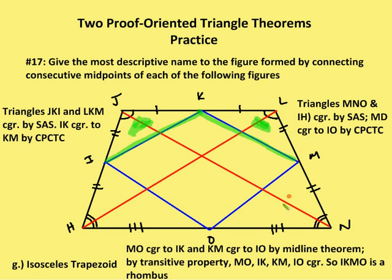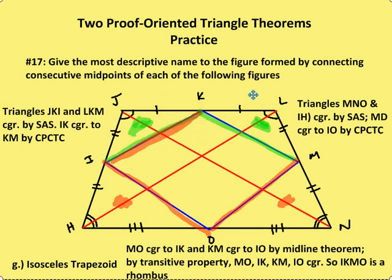Triangles MNO and IHO are congruent again by side-angle-side. So IO and MO are congruent by CPCTC. MO is congruent to IK by the midline theorem — IK is half of HL, and MO is half of HL. So IK and MO are congruent. Since IK and MO are congruent, IO is also congruent to IK, and KM is also congruent as well. So I have four sides that are congruent. I have a quadrilateral with four congruent sides — it is a rhombus.